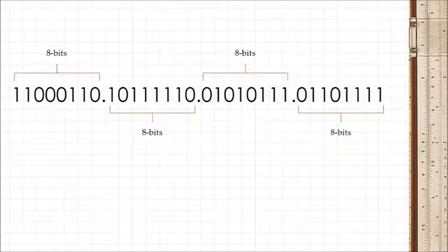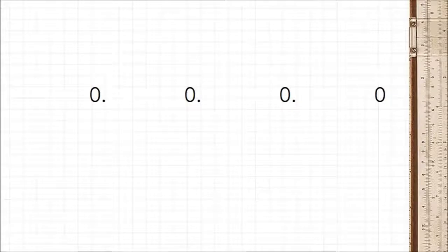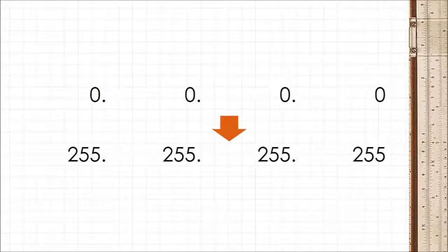An 8-bit number can have a value from 0 to 255, and we separate each octet with a dot. So IP addresses in the octet system can range from 0.0.0.0 to 255.255.255 and so on.